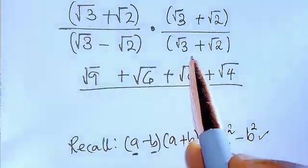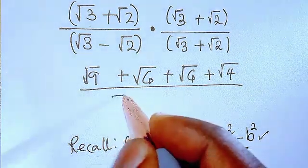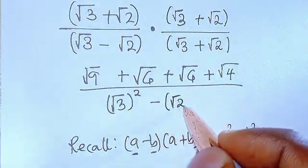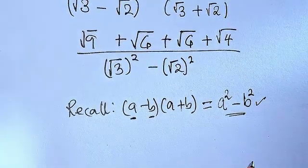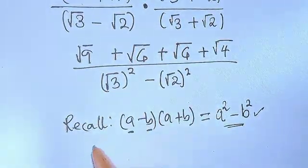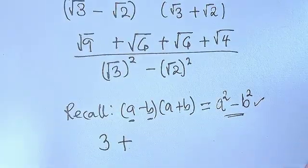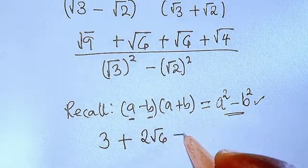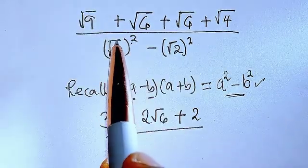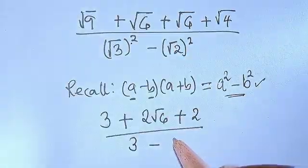So we are now going to write the denominator using that formula — root 3 squared minus root 2 squared. From there we simplify further. Root 9 is 3, and we have root 6 plus root 6 which gives us 2 root 6, then plus root 4 which gives us 2. Divided by: the square root cancels, giving us 3 minus 2.